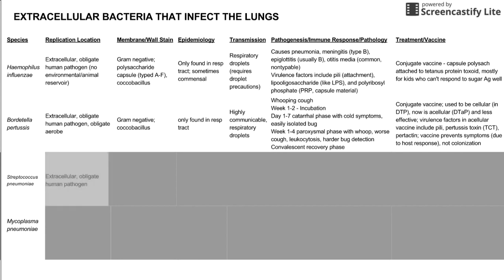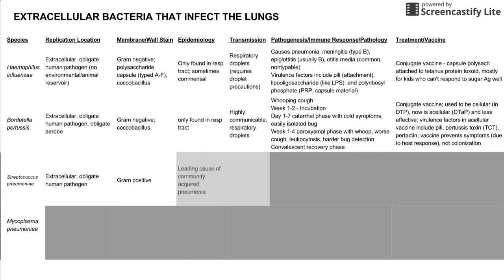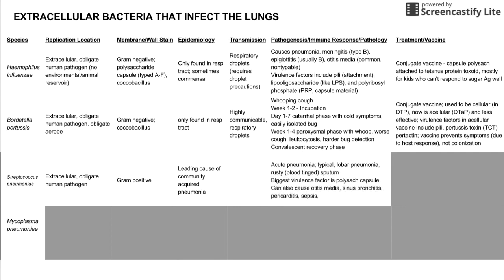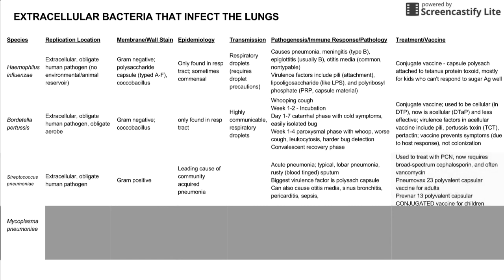Next we have Streptococcus pneumoniae, a pretty important cause of pneumonia. It's another extracellular obligate human pathogen and is gram-positive — Streptococcus is always gram-positive. It's the leading cause of community-acquired pneumonia. It generally causes an acute, typical lobar pneumonia isolated to one lobe, and can cause blood-tinged sputum. The biggest virulence factor is the polysaccharide capsule. It can also cause otitis media, sinus bronchitis, pericarditis, and sepsis. Treatment has shifted from penicillin to broad-spectrum cephalosporins, and often vancomycin as a last-line option.